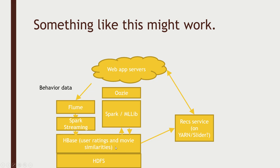Once we have that user ratings data in HBase, we can have a Spark job that runs maybe once a day, orchestrated by Oozie, that uses that user rating behavior data to compute what movies are similar to each other — so movie A is similar to movies B, C, D, and E. People who like Star Wars also like The Empire Strikes Back, Return of the Jedi, and Indiana Jones. That can run infrequently — that's the heavy lifting of this whole system. And Oozie can kick that off daily and update back into HBase a separate table that just has relationships between movies.